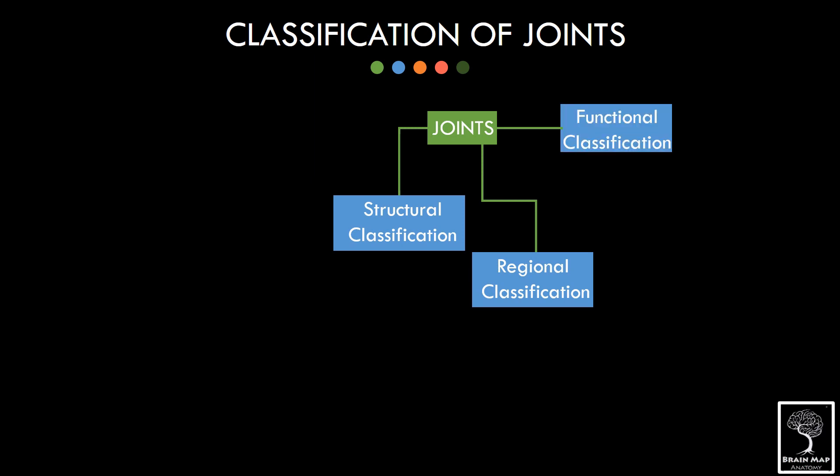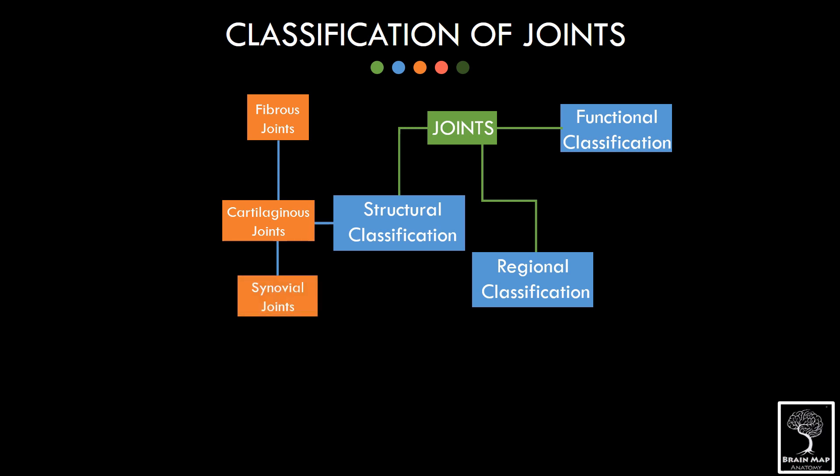Based on the type of tissue in between the bones, there are three types of joints under the structural classification. Fibrous joints, where fibrous tissue intervenes between the bones. Cartilaginous joints with cartilage in between the bones and synovial joints which have a complex anatomy.